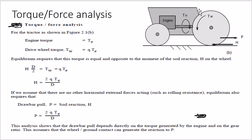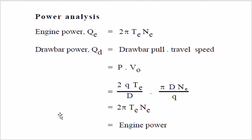When drawbar pull p equals soil reaction, the tractor moves forward. Engine power equals t_e · ω, where ω = 2π·n_e. Power can also be written as drawbar pull p multiplied by travel speed v. So multiplying the drawbar pull derived from torque analysis and the travel speed derived from speed analysis gives the engine power, also called drawbar power. This completes the power analysis of the tractor engine.